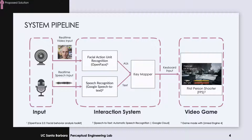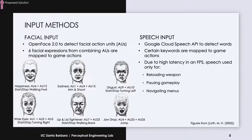To test our input system, we built a desktop FPS game in Unreal Engine. For the facial input, OpenFace detects AUs from the input video. AUs refer to facial muscle movements. We defined 6 facial expressions derived from AUs in our system, each of which is mapped to a certain action in the game. Under each face, we can see the corresponding mapping.